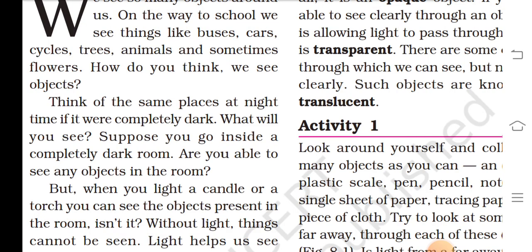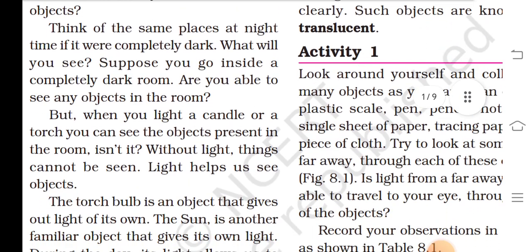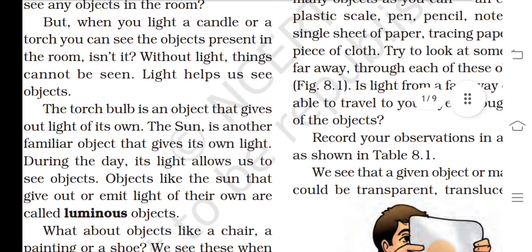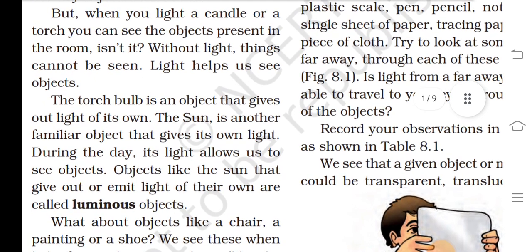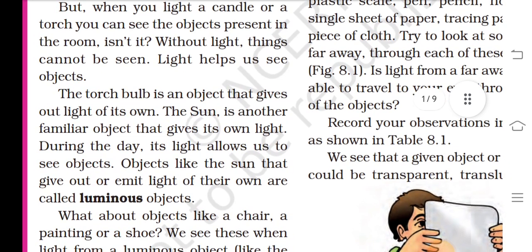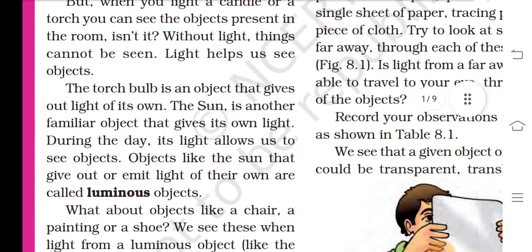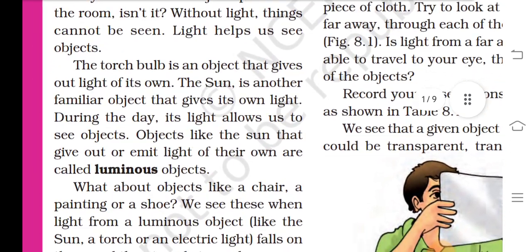How do you think we see objects? Think of the same place at night time if it were completely dark. What will you see? Suppose you go inside a completely dark room. Are you able to see any object in the room? But then you light a candle or a torch. You can see the objects present in the room. Without light, things cannot be seen. Light helps us see objects.